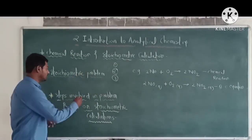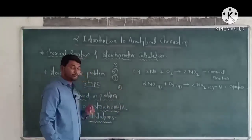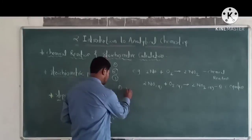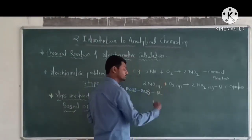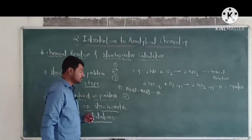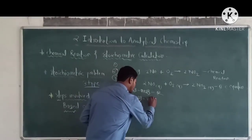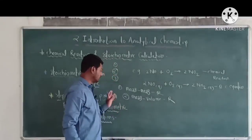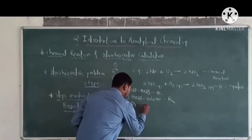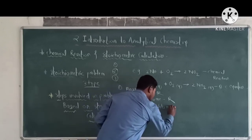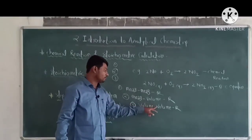There are three types of stoichiometric problems. First, the problem based on mass-mass relationship. Second, the problem based on mass-volume relationship. Third, the problem based on volume-volume relationship.